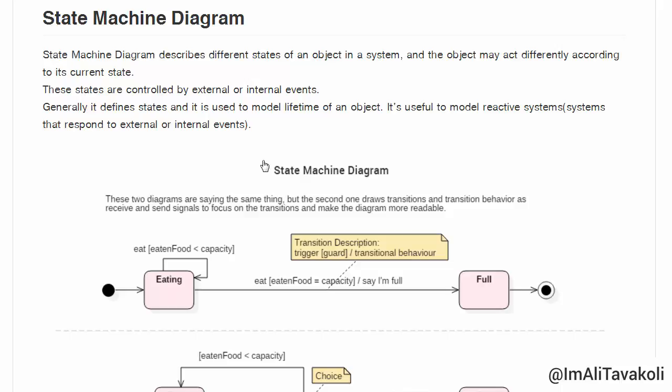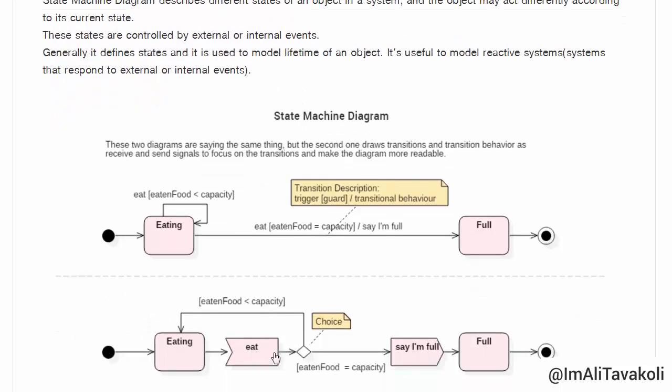So, here is an example of a State Machine Diagram. This is our state with eating and it will transit to the next state which is full by a transition arrow which has the transition description.